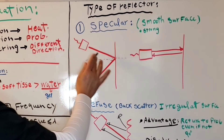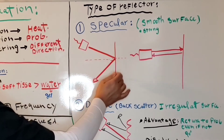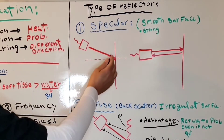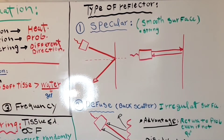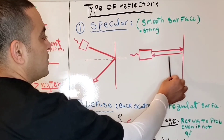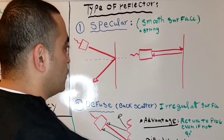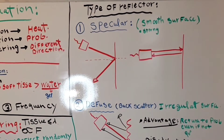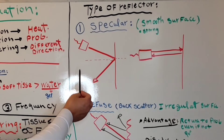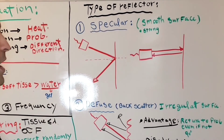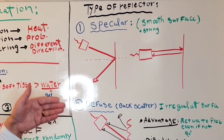A disadvantage of the specular reflector is that it will not return sound to the transducer unless the beam is at 90 degrees — perpendicular to the surface. If the transducer is not perpendicular, the sound beam reflects somewhere else. When it is perpendicular, the reflection returns back to the transducer, but this can cause artifacts. An example is the mirror artifact, which can be eliminated by making the transducer perpendicular.